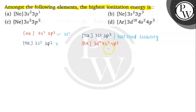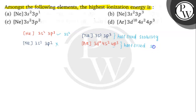Now for [Ar] 3d¹⁰ 4s² 4p³: here also 4p³ and 4s² are present, so this also has half-filled stability. We remove the electron from the outer orbital, that is the 4p orbital, so this configuration also shows half-filled stability.